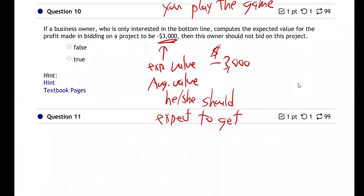This person, if they do this project, it's a little bit random because sometimes things work out or things don't work out in a project, so there's some randomness there. If the expected value is negative $3,000, that means the person on average should expect to lose $3,000.